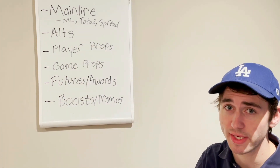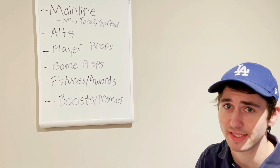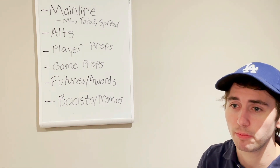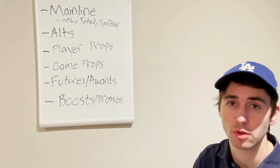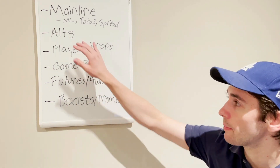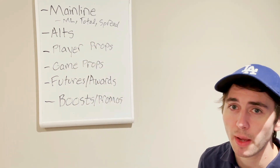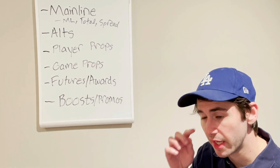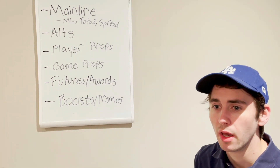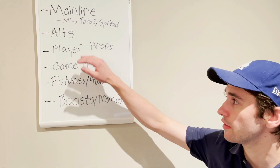Same thing for point spread. If the Bucs are minus 4.5 against the Suns, they'll also give you Bucs minus 10.5 at plus 210 odds. So there are opportunities in alternates. Then we have player props — pretty intuitive. First person to score a touchdown, LeBron James total points, all those things.